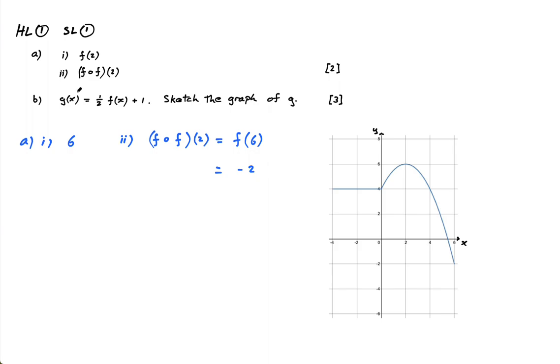Okay, part B then says g of x is a half f of x plus 1, sketch the graph of g. I'm going to sketch the graph of half f of x first, and then I'll add the 1, just to show you how it's done. You can do that in an exam. In fact, you probably should sketch both of them, but just make sure you're very clear to the examiner which one is which. You can always erase the first part if you want, but just be very clear what your final answer is.